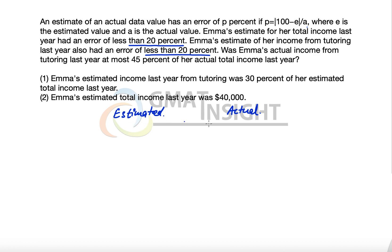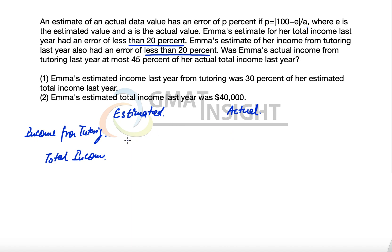Within these two categories, there are two types of incomes: income from tutoring and total income. Let's define the variables — actual income from tutoring as AT, actual total income as AI, estimated income from tutoring as ET, and estimated total income as EI.